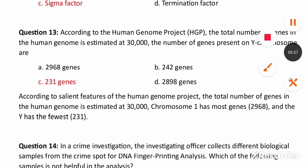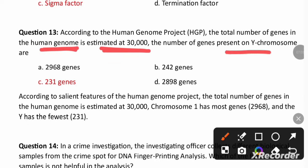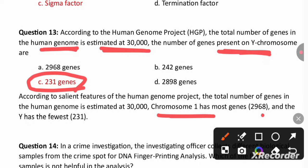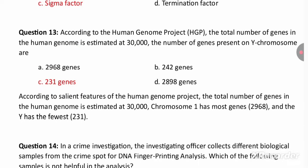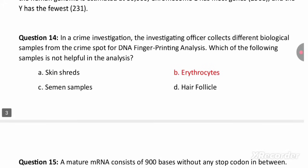According to the Human Genome Project, the total number of genes in the human genome is estimated at 30,000. The Y chromosome has the least number of genes — only 331 — whereas chromosome 1 has the most genes at 2,968. So the answer for the question is 331, option C.